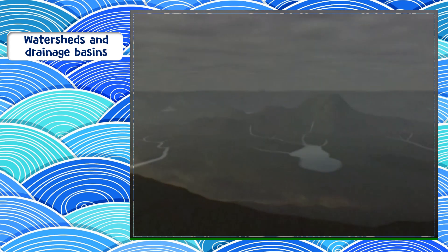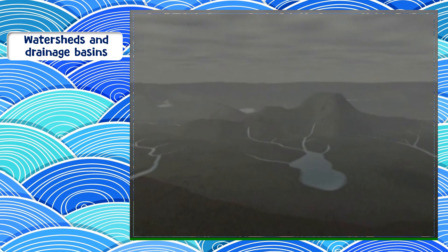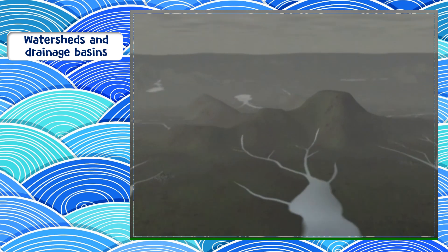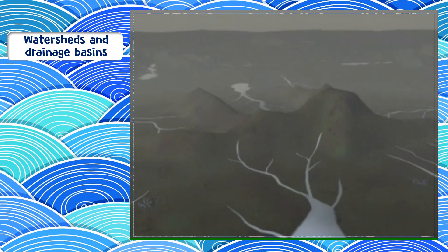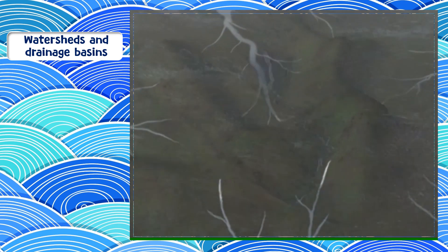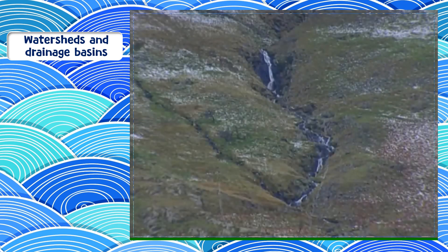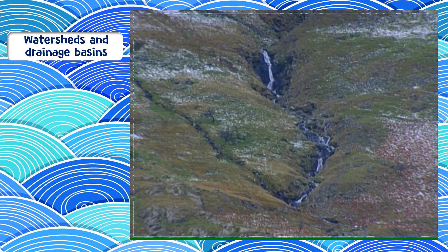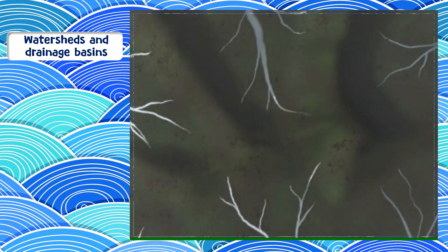As air hits the mountains it's forced to rise and condenses to form clouds of water droplets. Rain or snow begins to fall. This water runs quickly off the granite rocks forming steep fast-flowing streams on the mountainsides. Viewed from above we see how the rivulets form radial patterns as they flow down from the mountain peak.